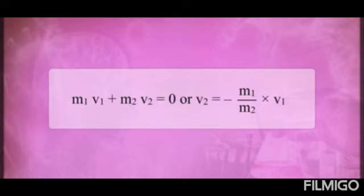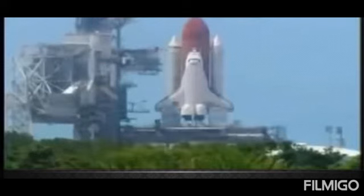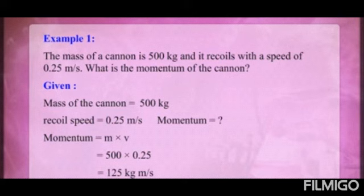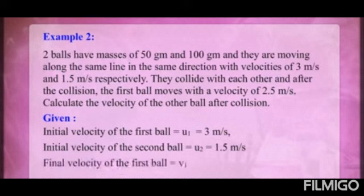Using this formula, if any three quantities are given you can find the fourth. The same principle applies to rockets — a rocket also works on Newton's third law; whatever force the rocket applies on the ground, the ground gives an equal and opposite force, propelling the rocket upward. Now let us solve an example: a cannon has mass 500 kg and recoils with a speed of 0.25 m/s. Momentum = mass × velocity = 500 × 0.25 = 125 kg·m/s.